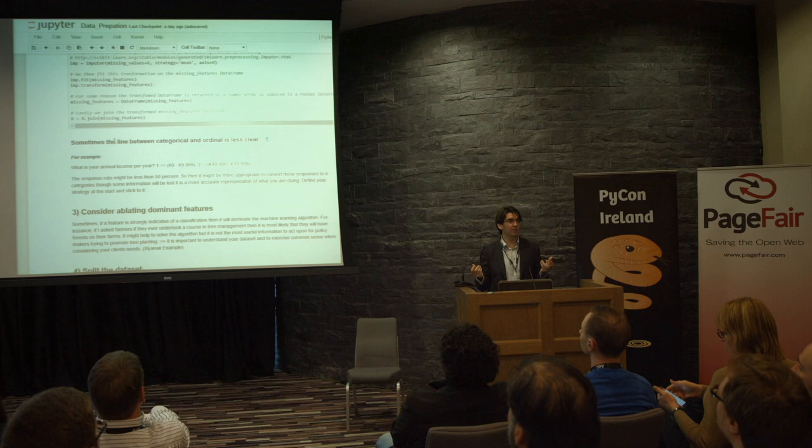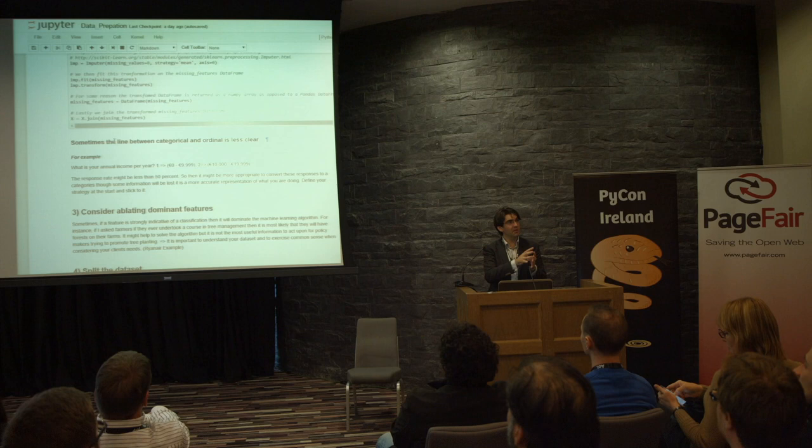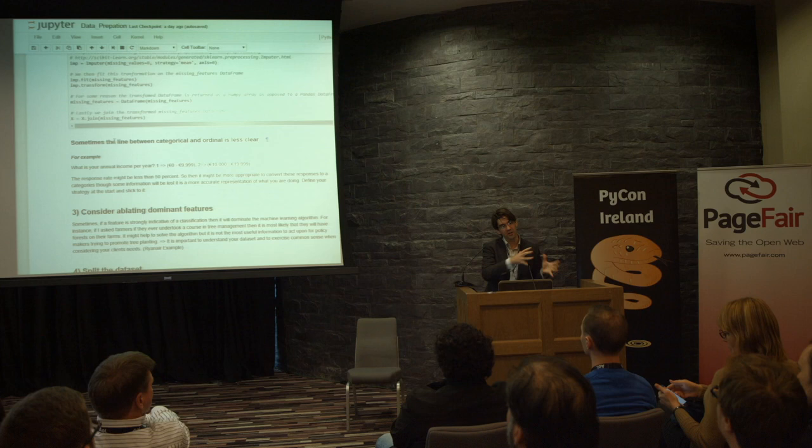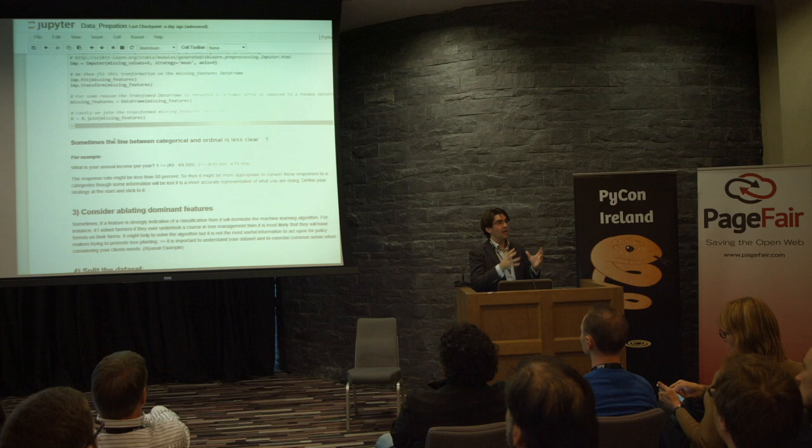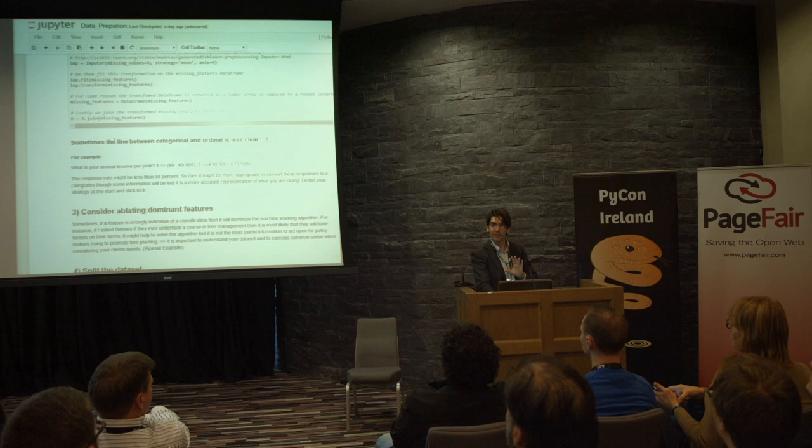Sometimes if you ask questions like how much did you earn last year, only 50% of people at best will answer. If you're missing too many responses, you're better off converting an ordinal variable into a categorical variable and creating a 'no answer given' category, because it's a more honest reflection. The key emphasis here is: devise a strategy, state your strategy, and stick to it. Just be honest, put it out there, and no one can argue with you.